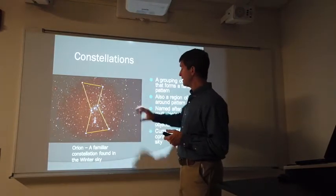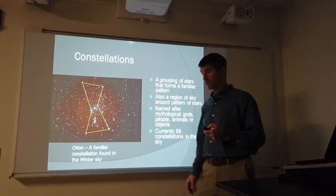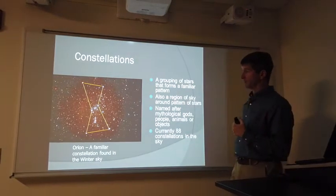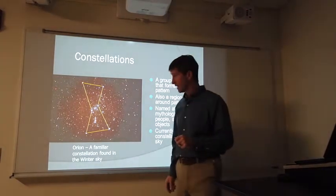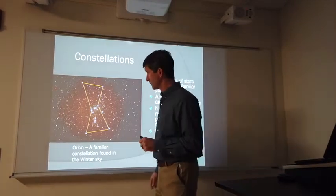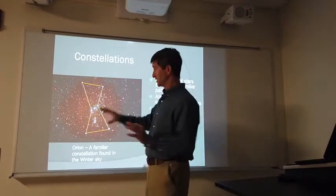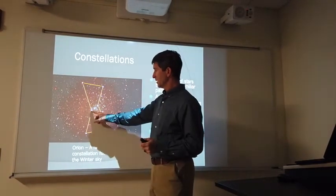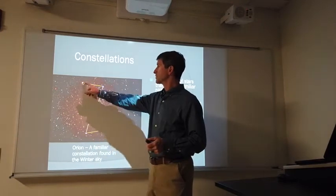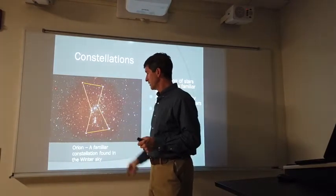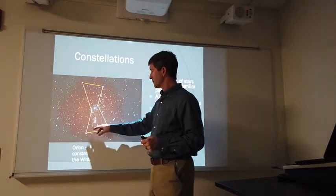And these patterns, 88 official patterns, are known as constellations. This is a very familiar constellation in the winter sky known as Orion. I always like to think it looks like an hourglass. Here's the belt of Orion, here's the shoulders of Orion, here are the knees of Orion, and there's supposed to be a sword.